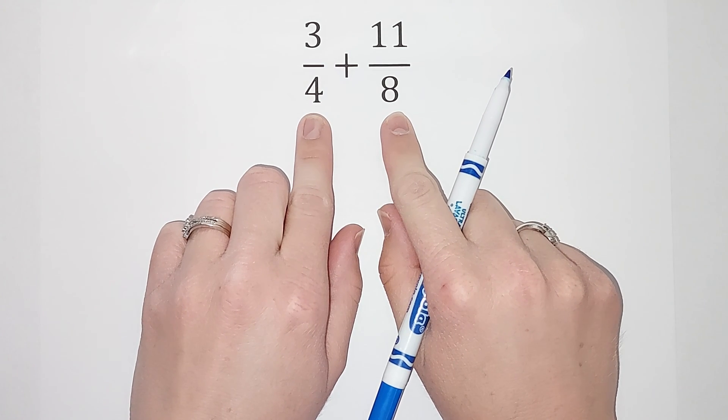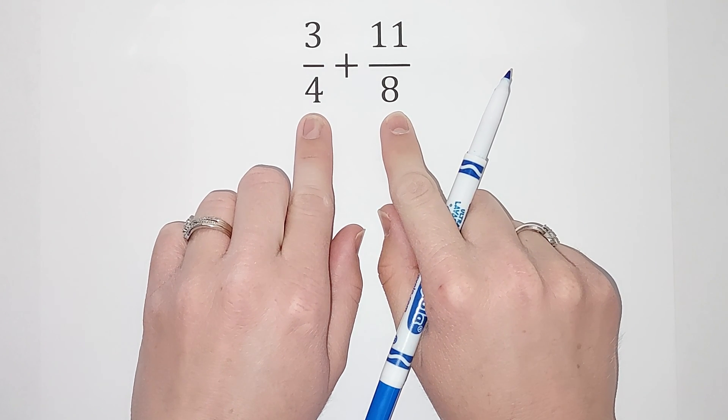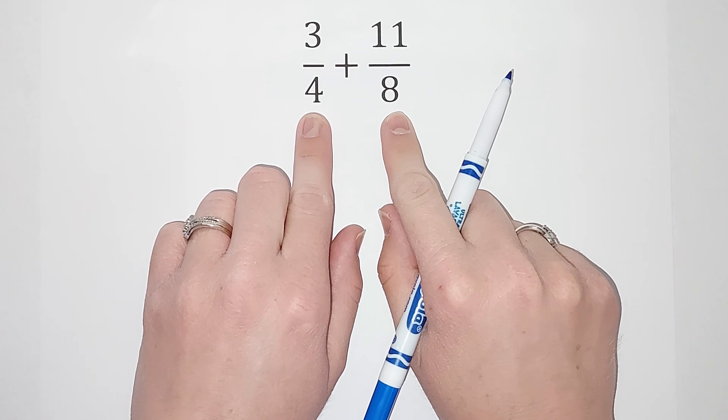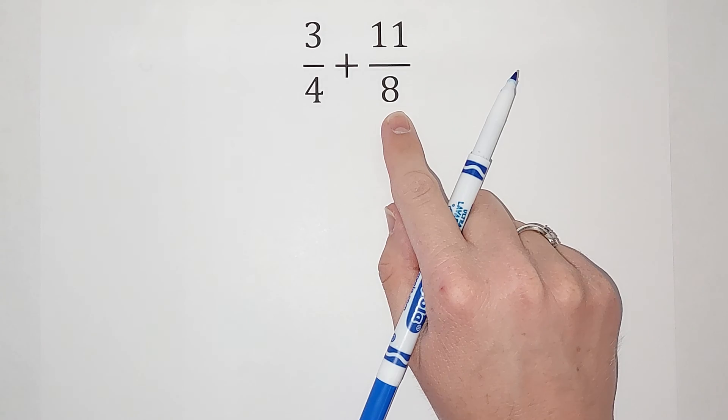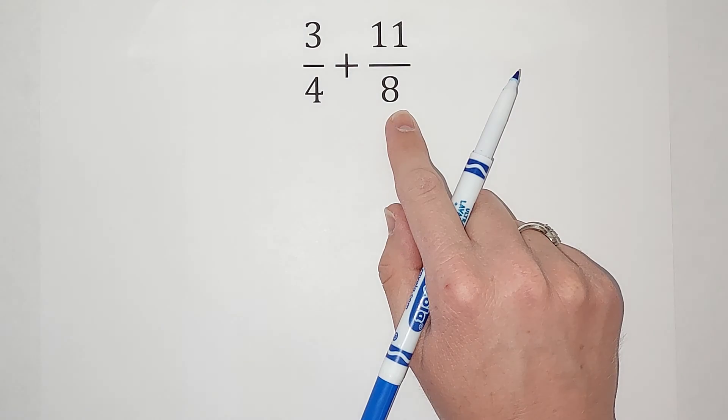So the one bad news thing is that when we add fractions, the denominators have to be the same. So we need to get them the same. If you're wondering what happens if we don't get them the same, I will link a video in the corner.